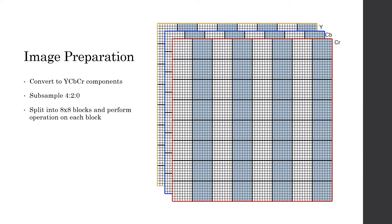In terms of processing, we have three matrices: a Y matrix, CB matrix, and CR matrix, and we split them into 8x8 blocks and perform the following operations on each block.